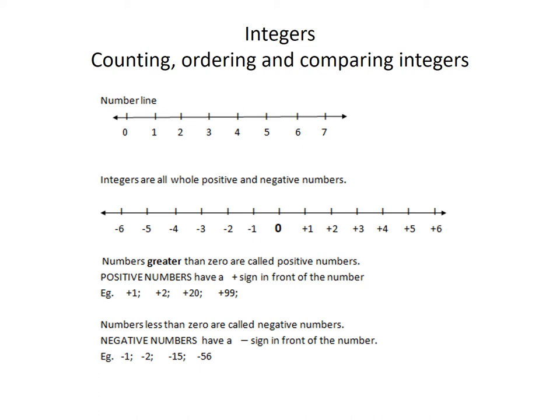As you would notice, the first number line I have on the screen is a number line that you would normally see. That is a number line that starts with zero and has all your counting numbers. Now, what you will also notice is that on either side of the number line there are arrows.